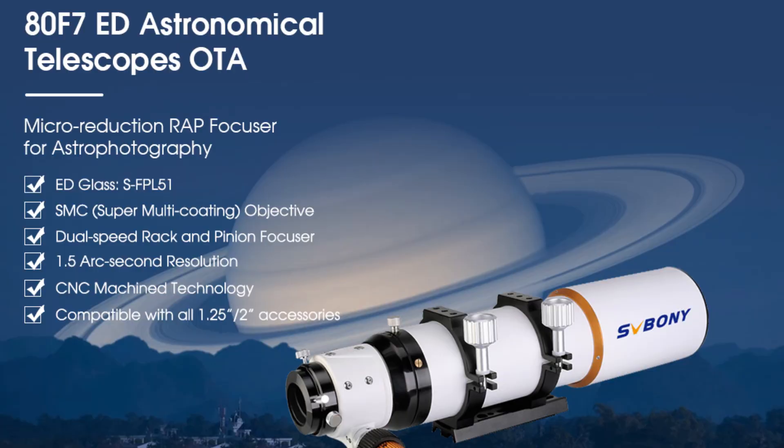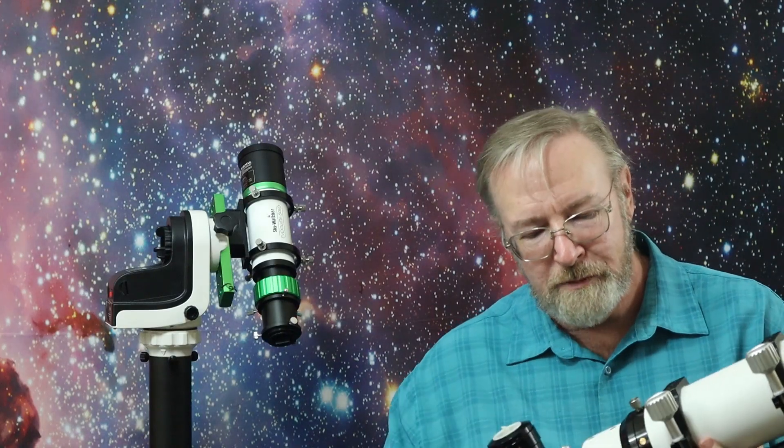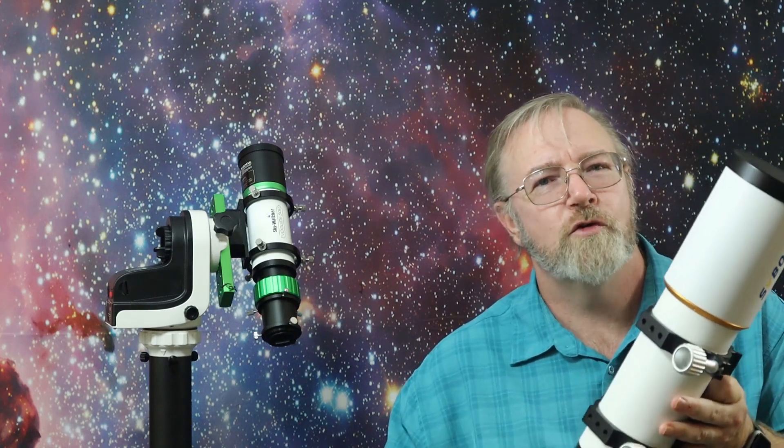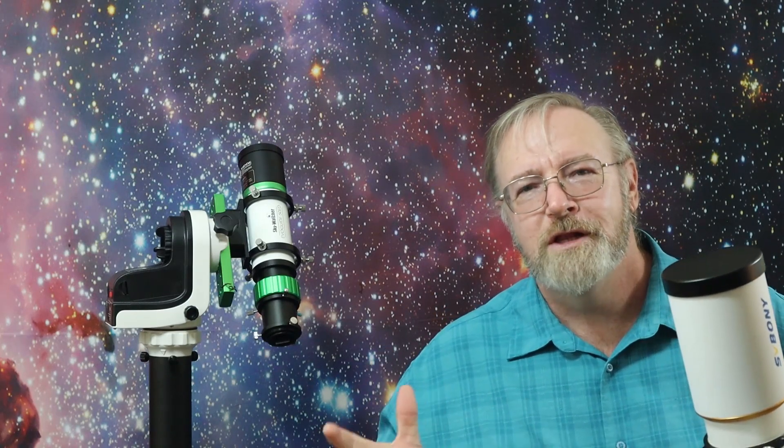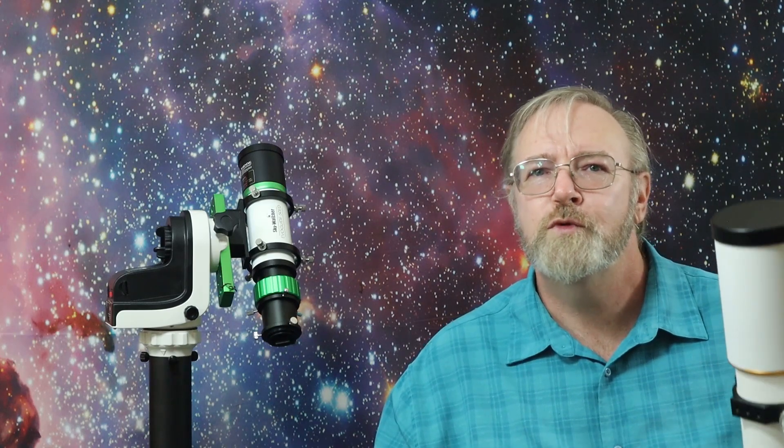Alright, the second scope we're looking at is the SV Boney SV503. It's an 80mm doublet. The fit and finish on this scope is really pretty good for the price point. You can get a good selection of 80mm ED doublet scopes in the $600 to $800 price range.